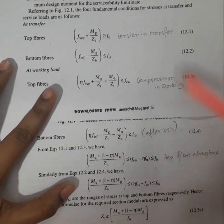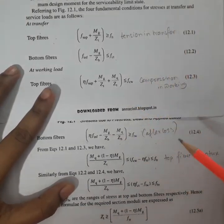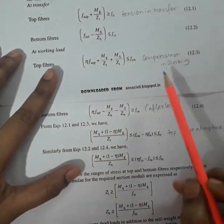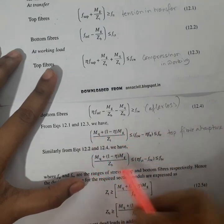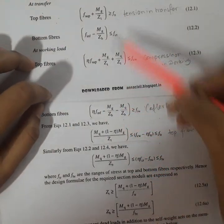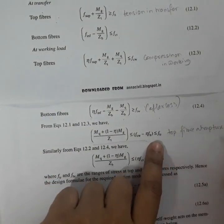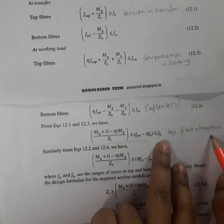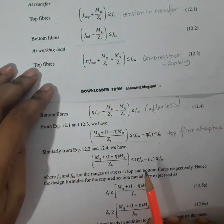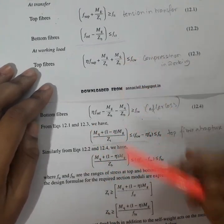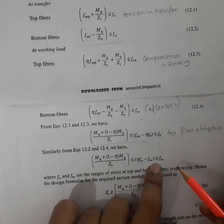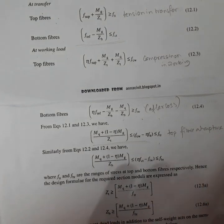These are the four expressions. By solving them, we will evaluate the minimum section modulus requirement. Solving the top fiber equations together gives an expression represented as FTR — the stress at the top fiber at the time of rupture. Similarly, solving both bottom fiber equations gives an expression represented as FBR — the stress at the bottom fiber at the time of rupture.